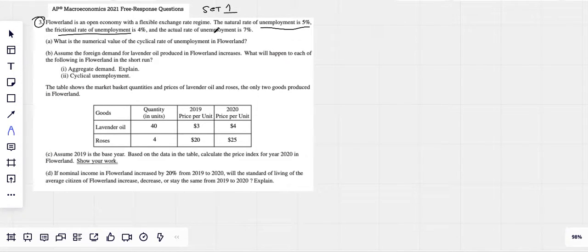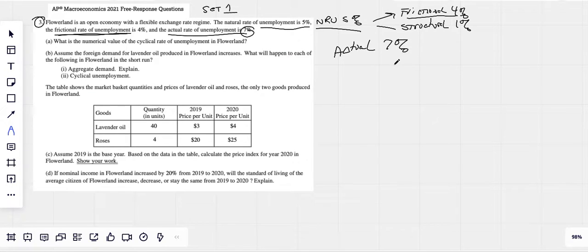And it's Flowerland, an open economy with a flexible exchange rate. The natural rate, the NRU, is 5%. The frictional rate of unemployment is 4%. And the actual rate of unemployment is 7%. So what we need to know is that inside your natural rate of unemployment, you have not only frictional, but also structural. So our natural rate is 4% frictional, 1% structural. Our actual rate, though, of unemployment is 7%. We can see that our actual rate of unemployment is greater than the natural rate. So this implies that we are dealing in a recession.